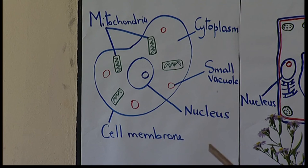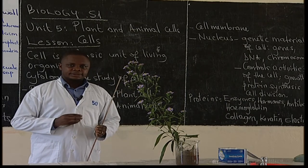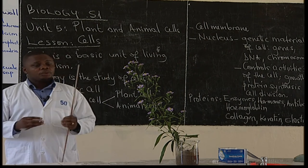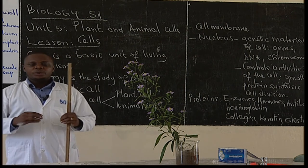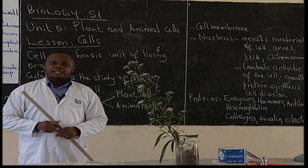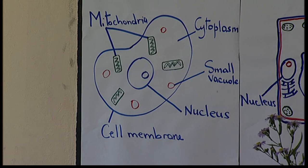We also have the small vacuole. It is very important in storing waste products to prevent other parts of the cell from being contaminated. In the vacuole, we can also find nutrients, and it provides pressure which is needed for strengthening the cell. We have cytoplasm — that is where we find other small structures within the cell.